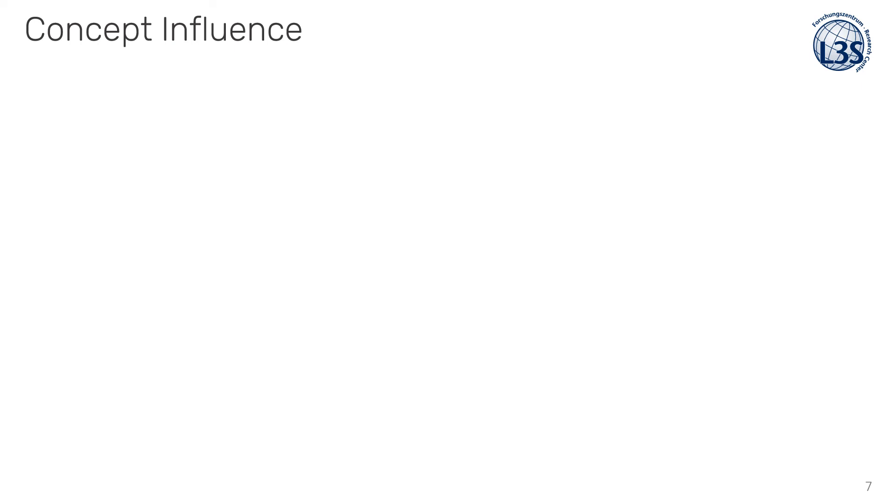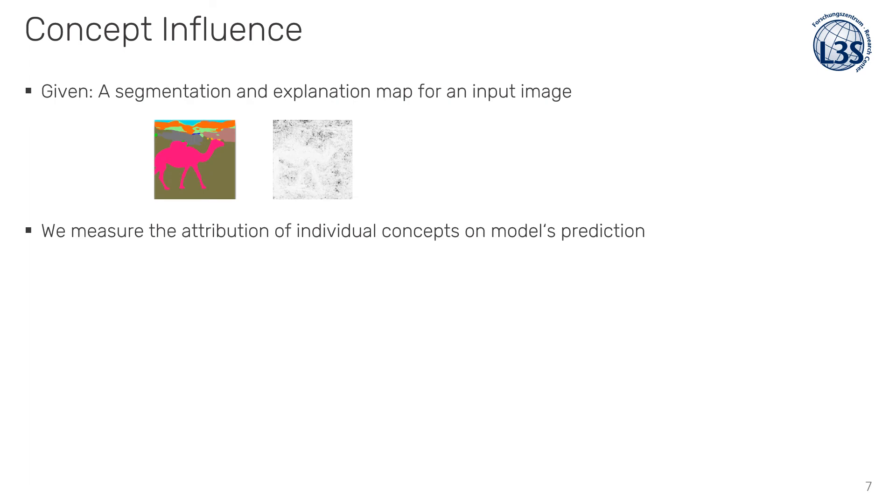Our second contribution is the concept influence that requires a segmentation and explanation map. Given this information, we provide a score that should approximate the attribution of an individual concept with respect to model's prediction. We took a set of images with known ground truth locations and aggregate the concept influence score and group-like geolocation error.